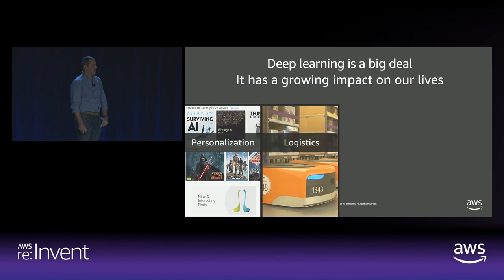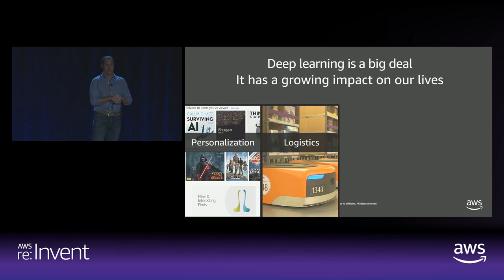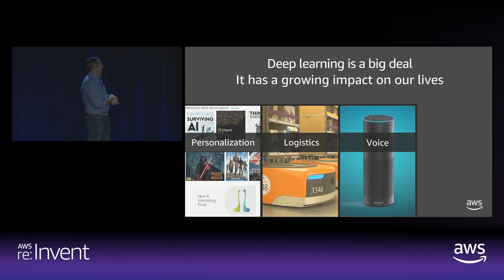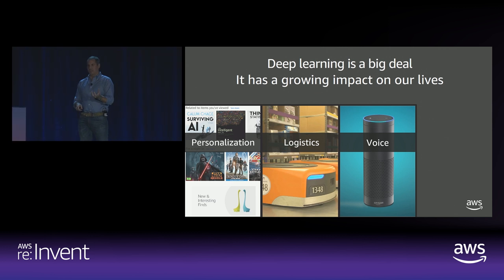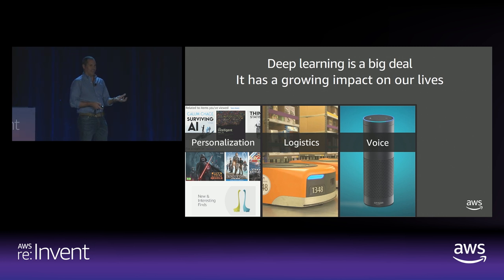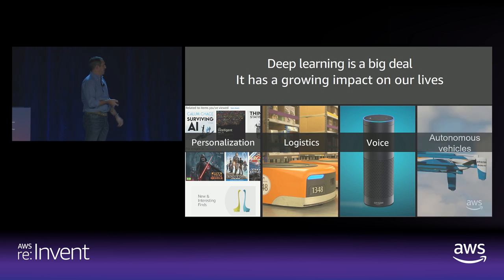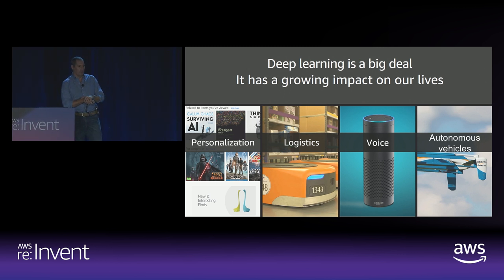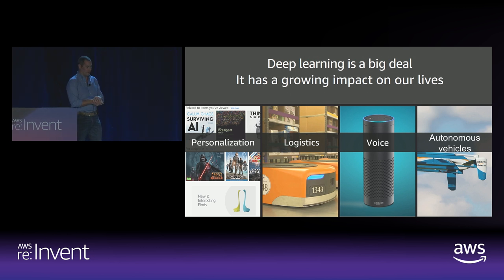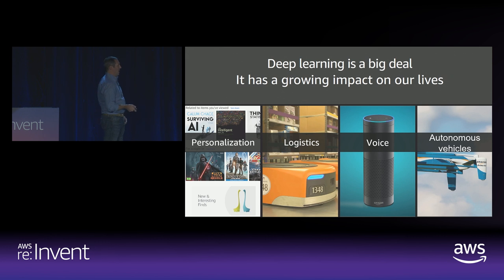In our fulfillment centers, we're using machine learning for logistics — those orange Kiva robots zip around fulfillment centers and pull items off the shelf. Everyone knows Amazon Alexa: there's automatic speech recognition, converting speech to text, then natural language processing to figure out what you asked the device to do. And of course, autonomous vehicles make heavy use of computer vision for autonomous driving — and that includes not just cars but drones and other unmanned vehicles.